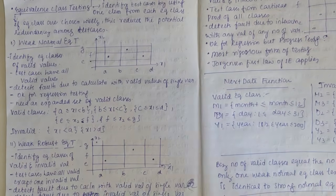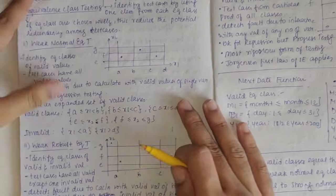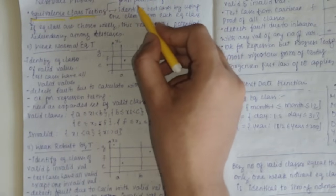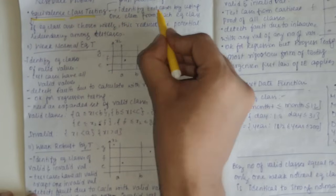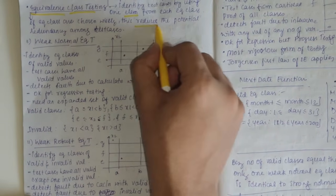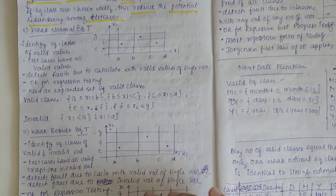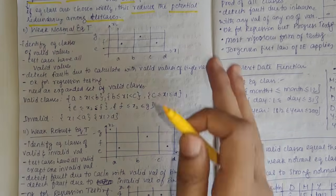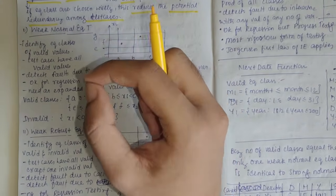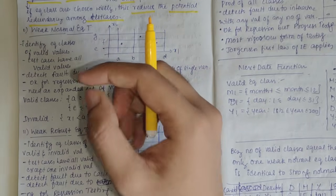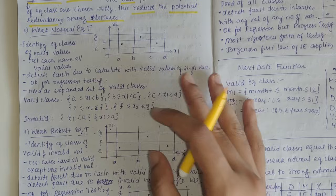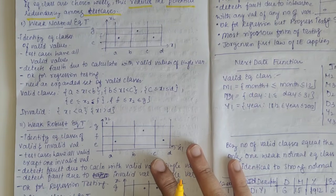Moving to equivalence class testing — it is a form of partitioning a set. We identify test cases by using one element from each equivalence class. If equivalence classes are chosen wisely, this reduces potential redundancy among test cases. Elements of a subset have something in common. The key point is to choose the equivalence relation efficiently.